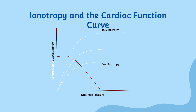An increase in inotropy results in a shift of the curve upward and to the left, meaning that for a given right atrial pressure, cardiac output and venous return will increase. Similarly, a decrease in inotropy will result in a shift of the curve downward and to the right. If you increase the inotropy or contractility of the heart, you will create an increase in stroke volume and therefore an increase in cardiac output. This increase in stroke volume translates to an increased cardiac output at the same or lower right atrial pressure. The opposite is also true: decreased inotropy means there will be less cardiac output at a given right atrial pressure.